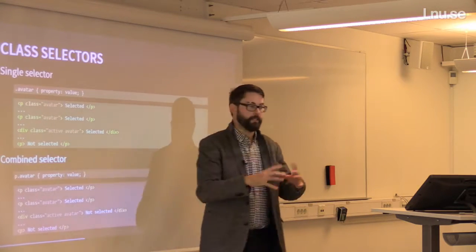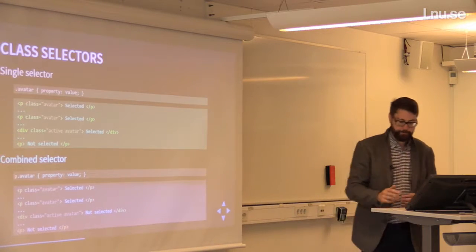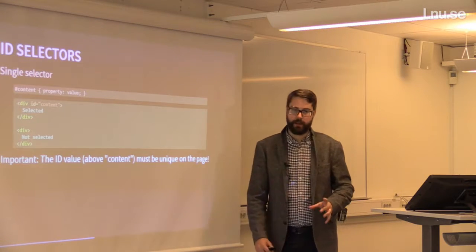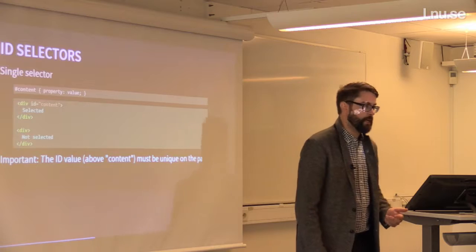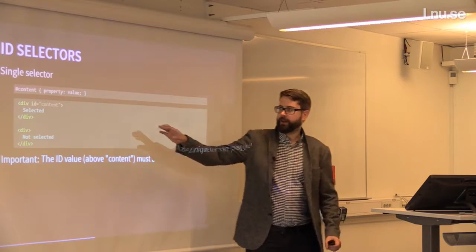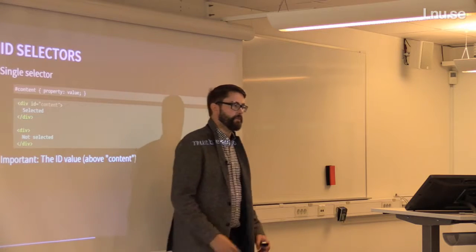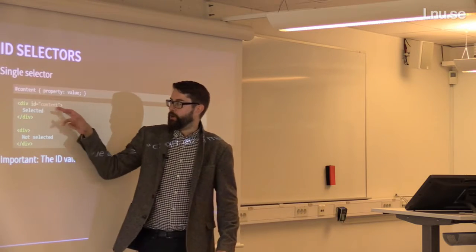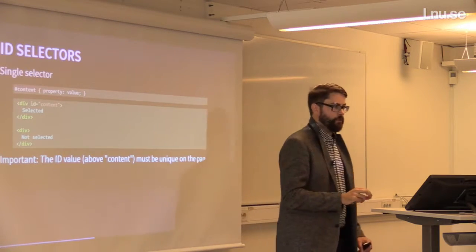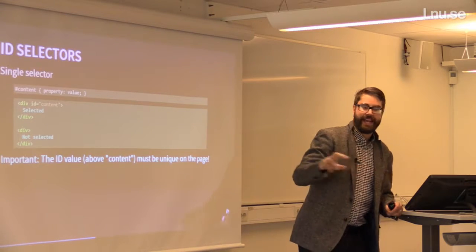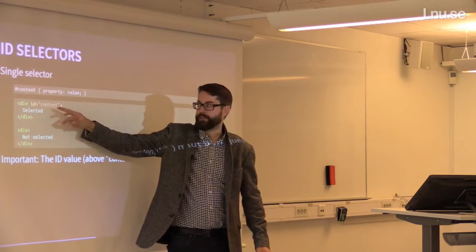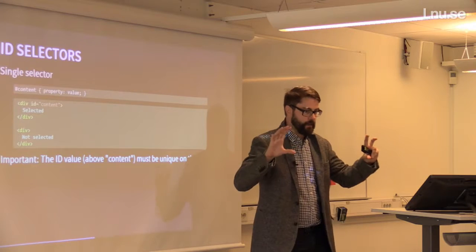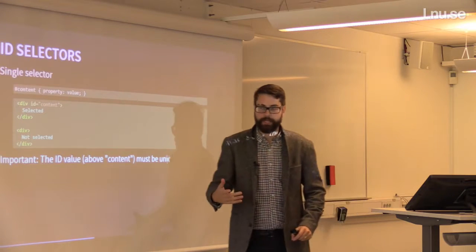So for link pseudo-classes, specify them in the correct order for them to work properly together. There are many examples of hovering links with CSS in the documentation. Now — specificity. Different selectors have different specificity — some are more important than others. This is important to know when writing CSS because you'll have conflicts: one rule telling all p tags to be green and another telling them to be yellow. Which one wins?